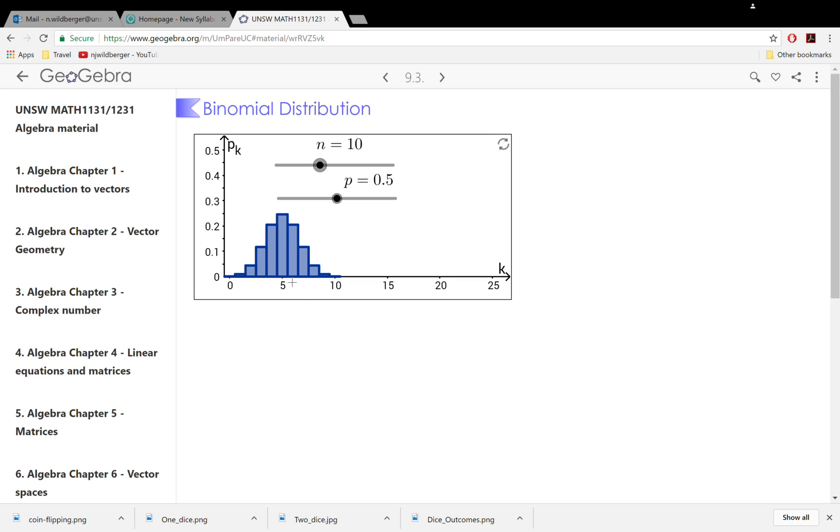The probability of getting five heads out of 10 is about 0.25. It's around a one in four chance of getting five heads when you toss 10 coins.